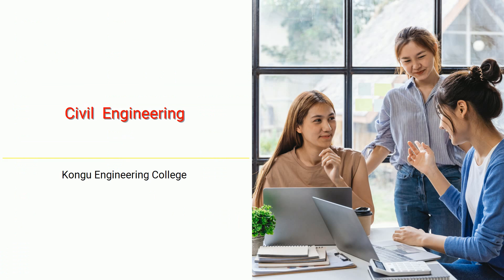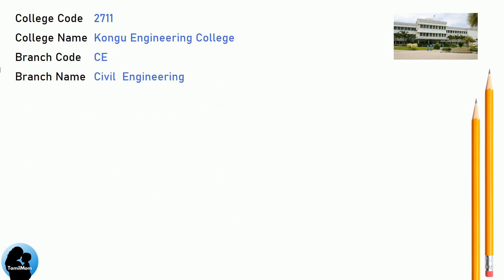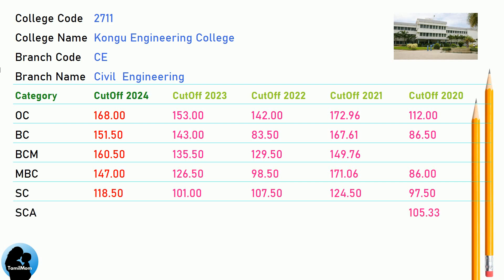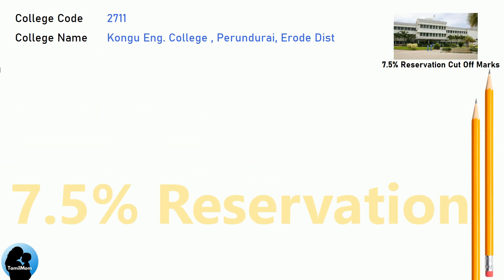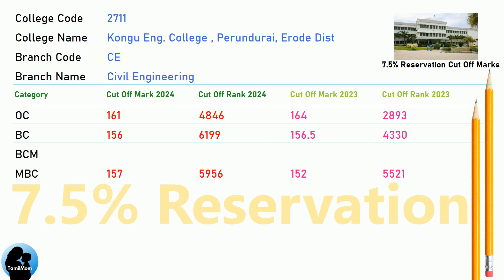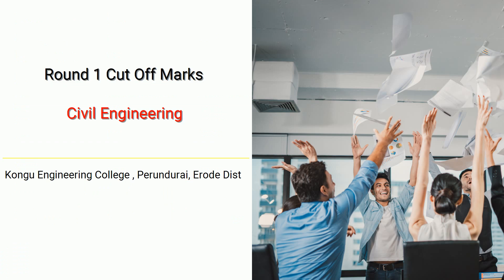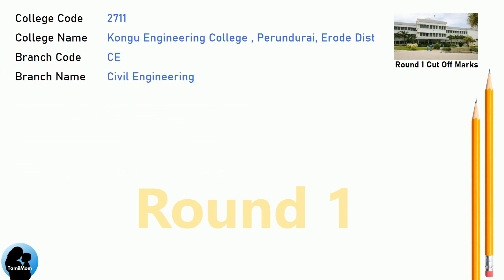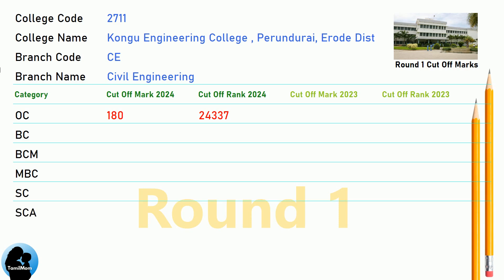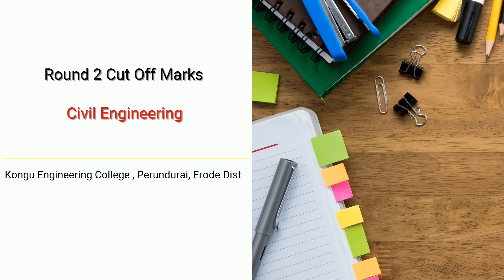DNA cutoff for Kongu Engineering College in Computer Science and Design. DNA cutoff for Kongu Engineering College in Civil Engineering. DNA 7.5 reservation cutoff, Round 1 cutoff, and Round 2 cutoff for Kongu Engineering College in Civil Engineering.